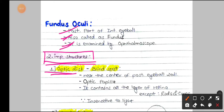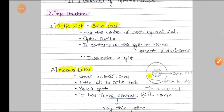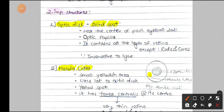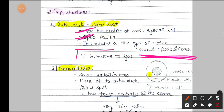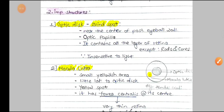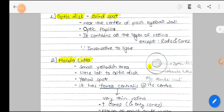The optic disc is the so-called blind spot. It is present near the center of the posterior eyeball wall and is also known as the optic papilla. It contains all the layers of retina except the rods and cones. Since the rods and cones responsible for vision are not present in the optic disc, it is insensitive to light and does not form or sense any image.